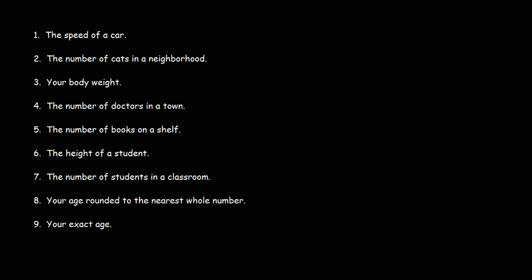Let's start with number one: the speed of a car. Would that be continuous or discrete? The speed of a car can be measured. A car could be going at 25.6 miles per hour, 30 miles per hour, or 42.86 miles per hour. It doesn't have to take on specific values - it can be any value. Therefore, the speed of a car represents a continuous set of data.